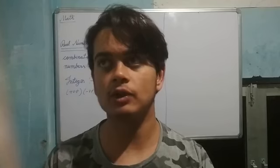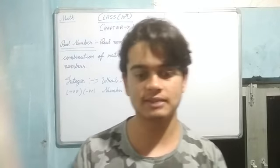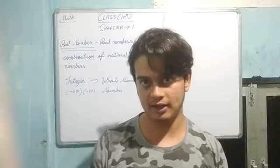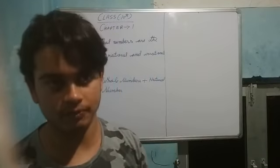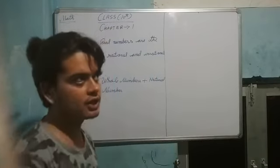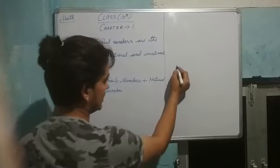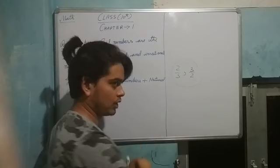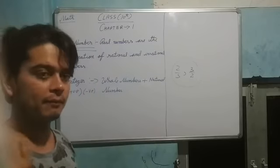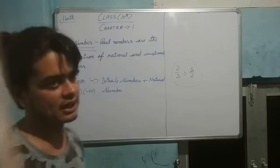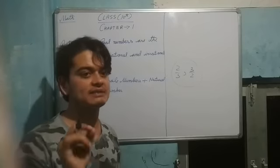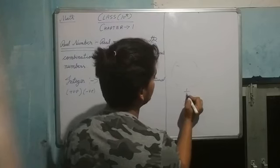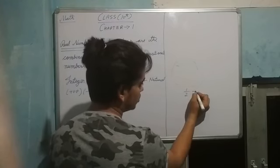If you have a cake and you take one-fourth part, one-fourth part — we call it a fraction. Fraction examples are 2 by 5, 3 by 2. A fraction can also be expressed as a decimal expansion.